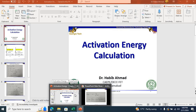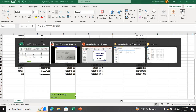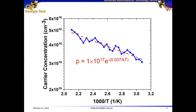We can also plot this in Origin. The final form of the equation is: p = A × e^(−0.037 eV / k_B T), where 37 meV is the activation energy. This is how we calculate the activation energy of dopants in semiconductors.